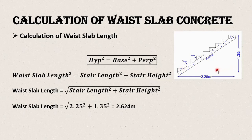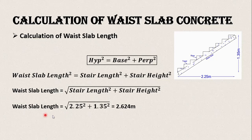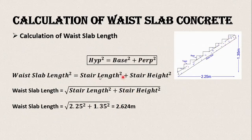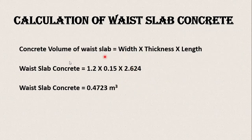There is another method for calculating the length of the waste slab, also using the Pythagorean theorem, but this time using the total run and height of the stairs. The waist slab length squared equals the stair run squared plus the stair height squared, giving a waist slab length of 2.624 meter. Both methods give the same answer, so you can use either one.